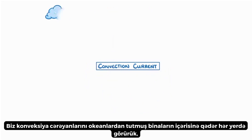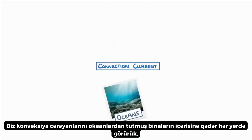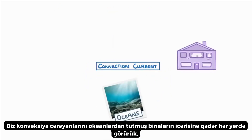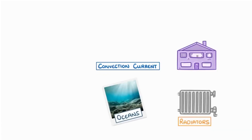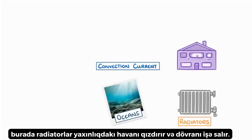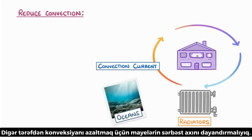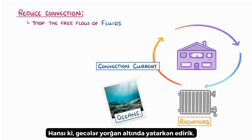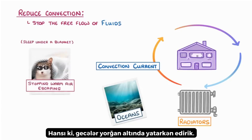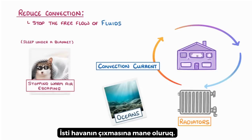We actually see these convection currents all over the place — from oceans to inside buildings, where radiators warm the nearby air and set off the cycle. On the other hand, to reduce convection, we need to stop the free flow of fluids, which is all we're doing when we sleep under a blanket at night, stopping the warm air from escaping.